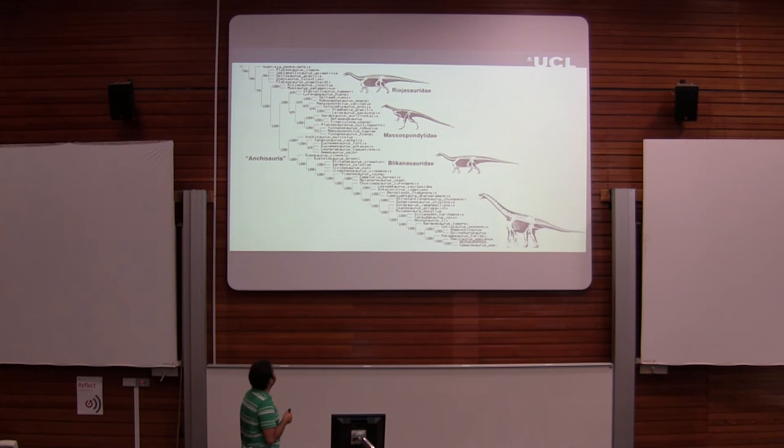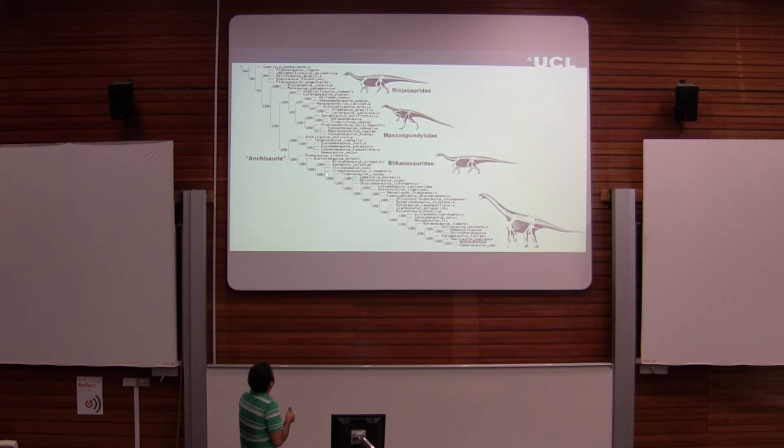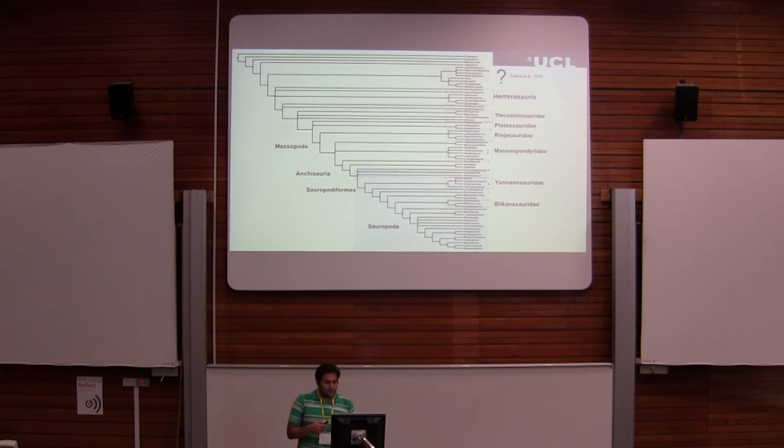Moving down the tree, here is Riohazauridae, then we have Massospondylidae — a clade where most or all members are considered bipedal — then we have Anchisauria, the clade where quadrupedality supposedly started to appear for the first time, and then we move all the way to sauropods.